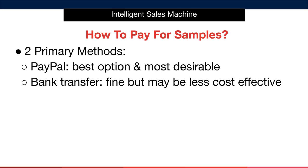There are two primary methods to utilize when paying for samples. PayPal, in my opinion, is the best option and the most desirable for you. The reason is that it's simple to use, it's secure, and if you never receive the samples, you can open a case against the seller in PayPal to help you recover your costs. Also, the fees are relatively low, and as a result it's perfect for small, fast transactions like this. You'll never pay for an entire order here, but it's ideal for samples. The other method is a bank transfer, also known as a bank wire. This is also fine, but it may be less cost effective, as the fees here are generally fixed. For example, if you're sending $100, the cost might be $20 to send that payment, whereas with PayPal you might pay $2 or $3.